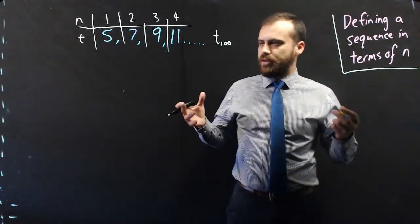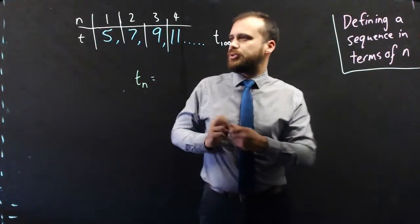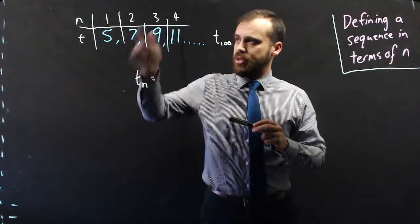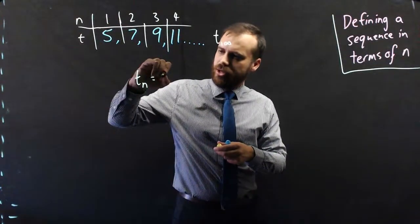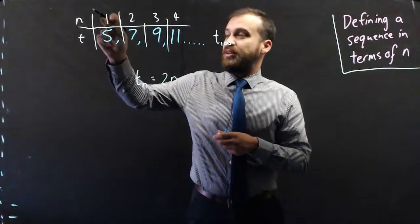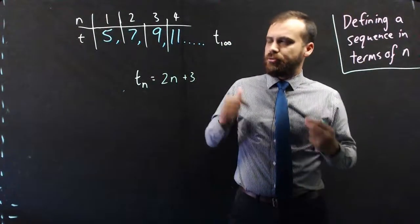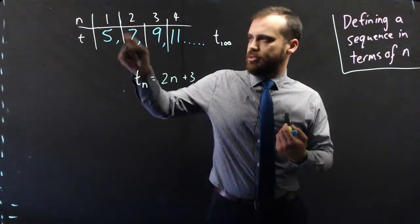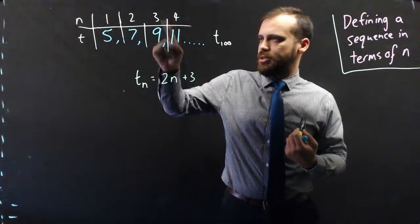Term n is equal to... I really did have to puzzle over that for a while. In order to do the same thing to each, I would take the number and multiply it by 2, then add 3. So: 2 times 1 is 2, plus 3 is 5. 2 times 2 plus 3 is 7. 2 times 3 plus 3 is 9. 2 times 4 plus 3 is 11.